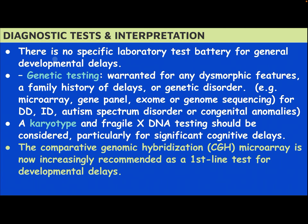Diagnostic tests and interpretation: there is no specific laboratory test for general developmental delay. Genetic testing is warranted for any dysmorphic feature, a family history of delays, or genetic disorder — examples include microarray, gene panel, exome, or genome sequencing — for developmental delay, intellectual disability, autism spectrum disorder, or congenital anomalies. Karyotype and Fragile X DNA tests should be considered particularly for significant cognitive delay. Comparative genomic hybridization microarray is now increasingly recommended as a first-line test for developmental delay.